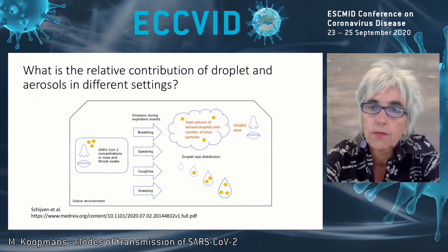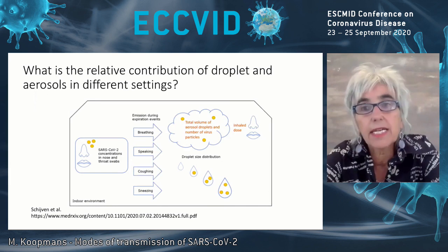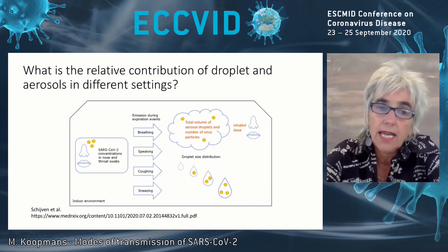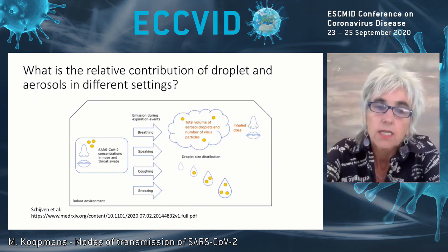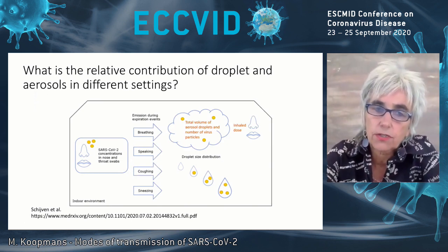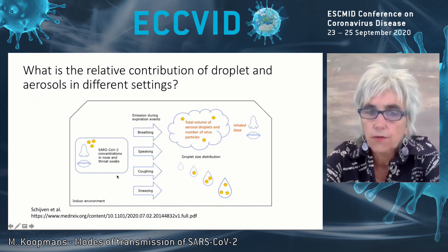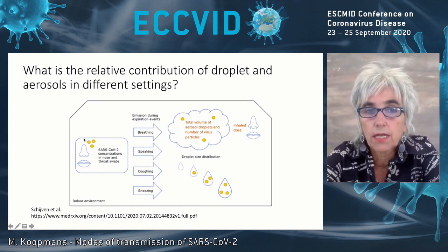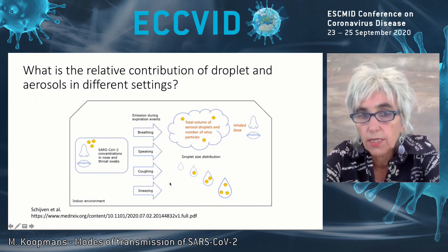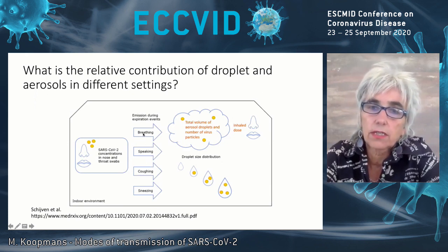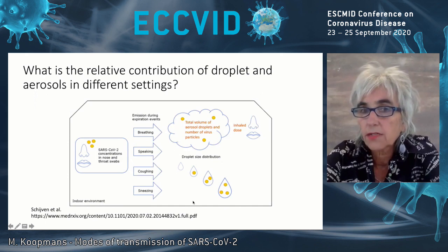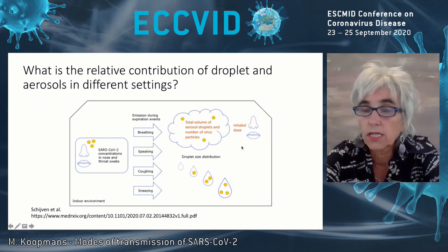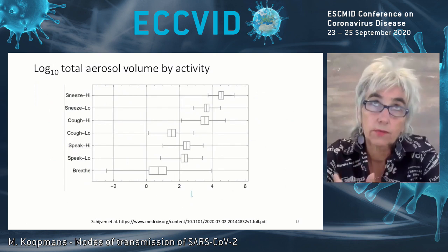Switching to the second topic — the relative contribution of droplets and aerosols. This is a very challenging debate. Here is an interesting attempt at trying to structure this discussion. What this publication did is a systematic literature review to see what do we really know — what do we know about concentrations of SARS-2 in nose and throat, about the volume of aerosols produced by different activities from breathing to speaking, the droplet size distribution, the volume and number of virus particles, and the inhaled dose — and they use that to model risk of exposure.